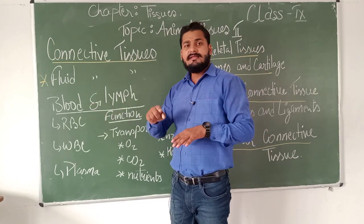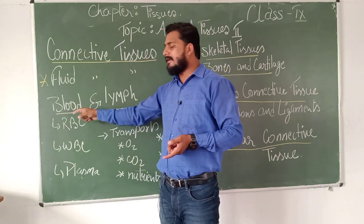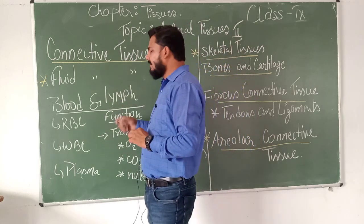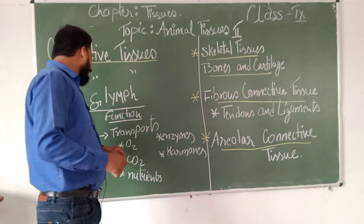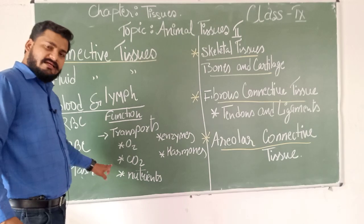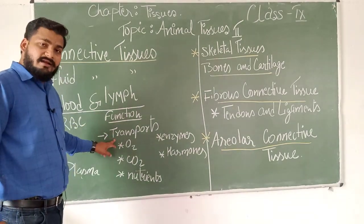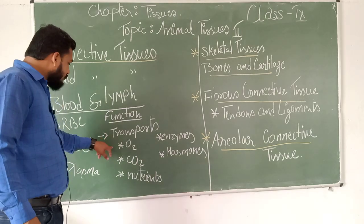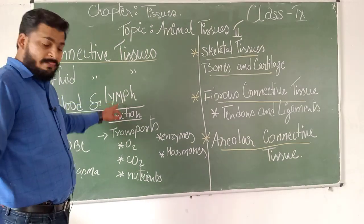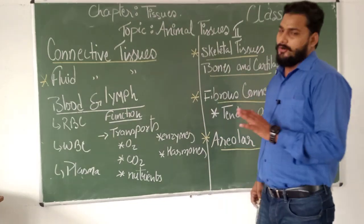Since lymph is whitish in color and blood is reddish, the red color overcomes the white, and hence we do not notice lymph coming out of a wound. Most of the time, lymph does similar transport functions but in a lesser way — most transport is done by blood, and very little by lymph. However, lymph also has some function in the defense mechanism of the body.